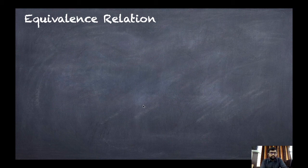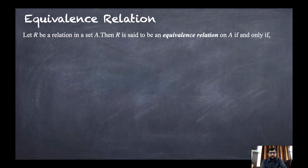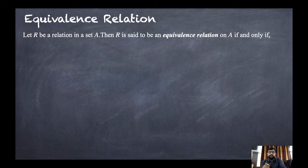To be precise, let capital R be a relation in the set capital A. That means R is a subset of A cross A, since both sets are the same. R is said to be an equivalence relation on A if and only if three conditions hold.